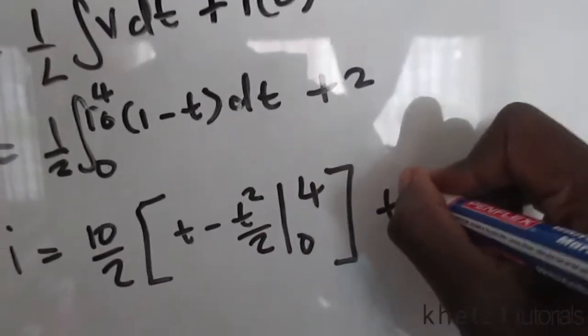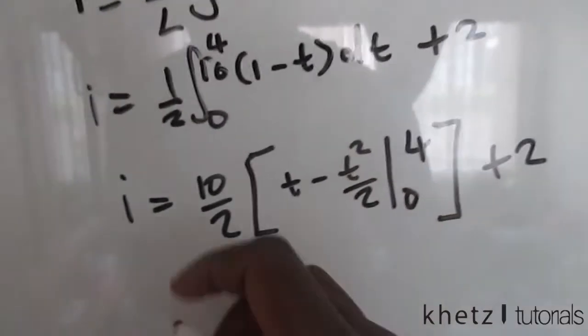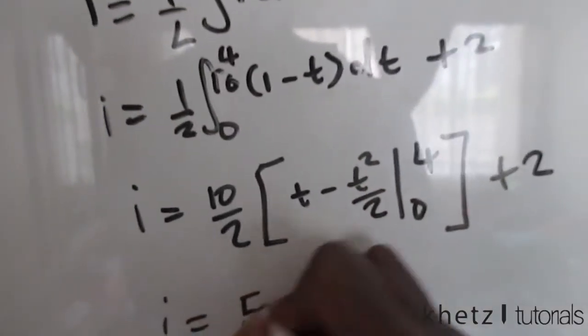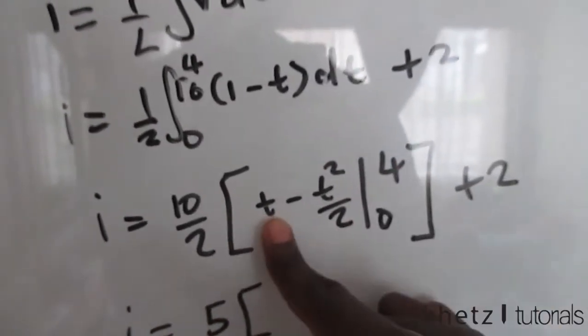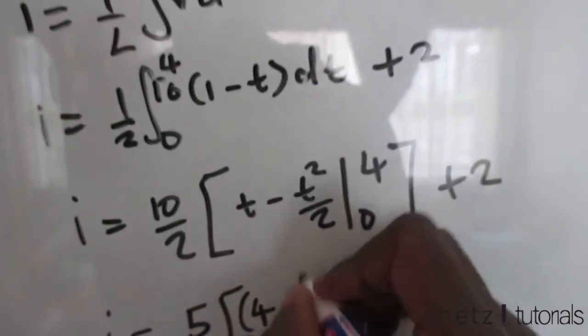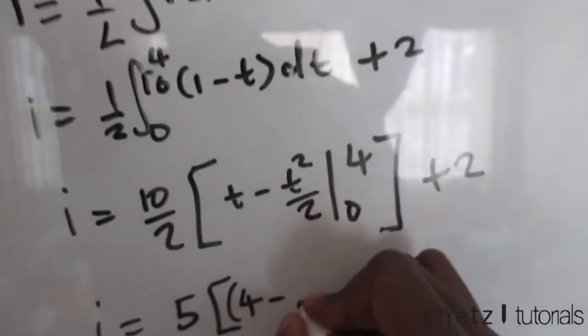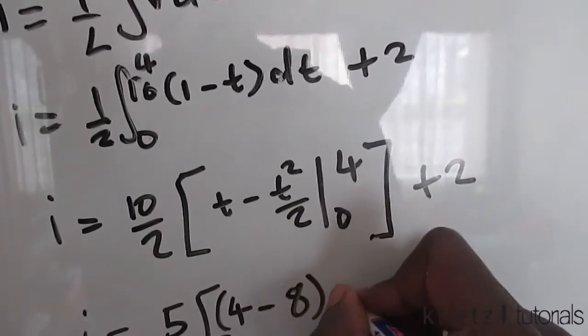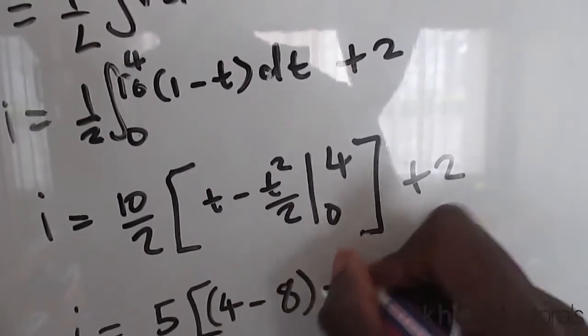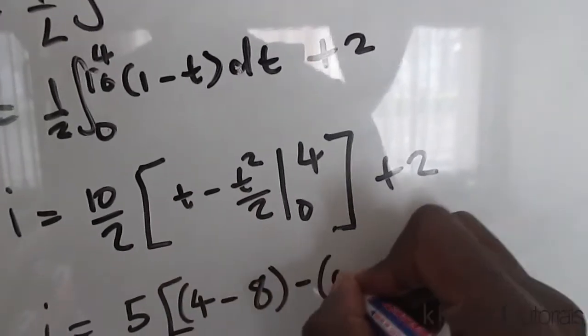And not forgetting to add the 2 which is the initial condition. So now we have i is equals to 5 multiply by, substituting 4 in here we have 4 minus 4 squared which is 16, 16 divided by 2 is 8, and we are also going to subtract 0.